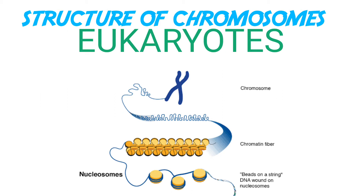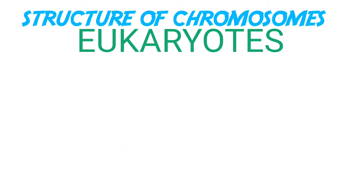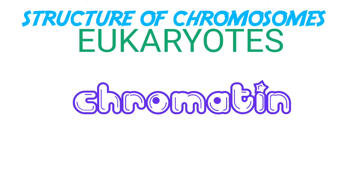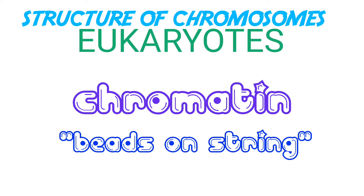Nucleosomes constitute the repeating unit of a structure in the nucleus called chromatin. The nucleosomes in the chromatin are seen as a beads-on-string structure when viewed under an electron microscope.